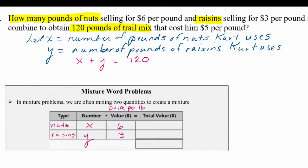The cost to buy the nuts is 6 times x — six dollars per pound times x pounds — so 6x. For raisins, Kurt is purchasing y pounds at three dollars each, so 3y is the cost for raisins. Together he ends up with a mixture of 120 pounds at $5 a pound, giving a total value of $600.